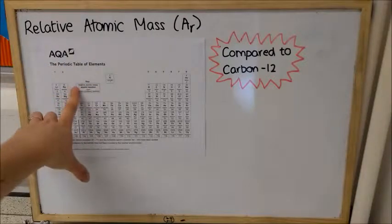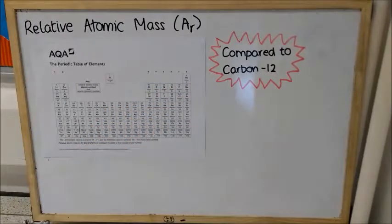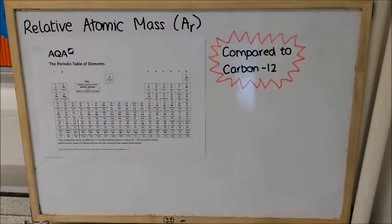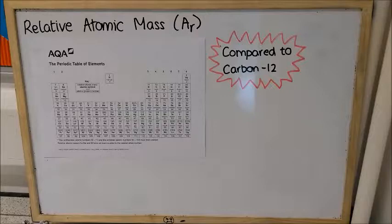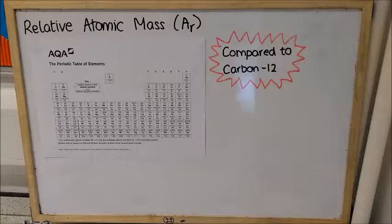And it does tell you that the number at the top is the relative formula mass. That's always compared to carbon-12, a type of carbon that weighs 12 grams per mole. So relative atomic mass is a number that you can read straight off your periodic table, and you're going to need that information in order to be able to calculate relative formula mass.